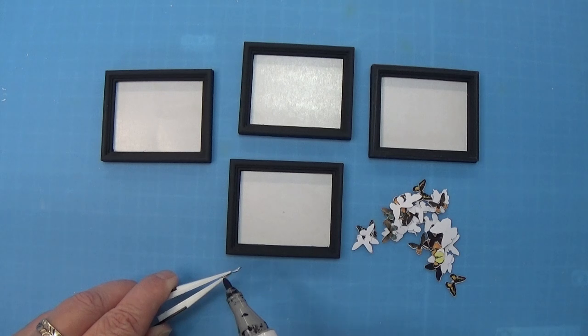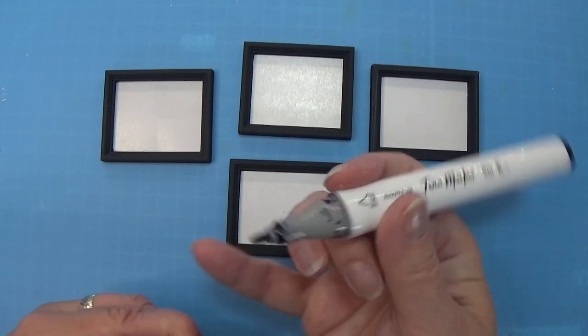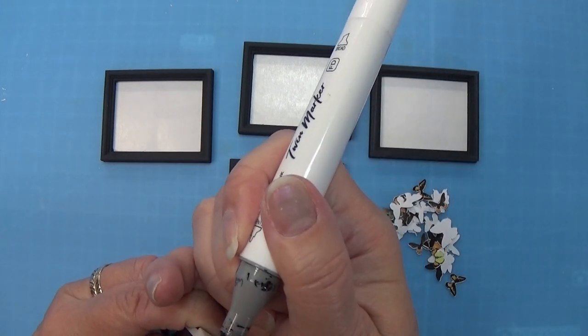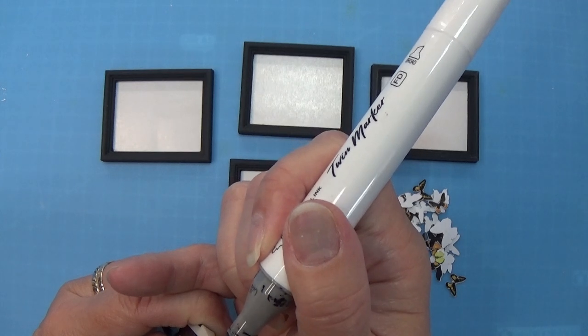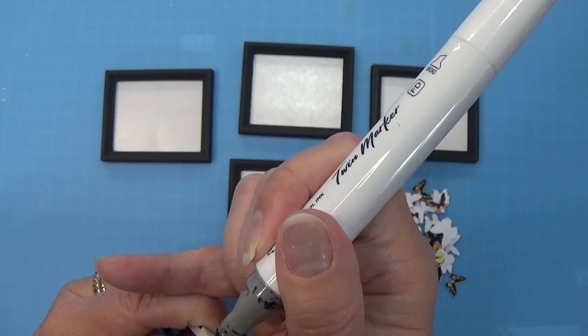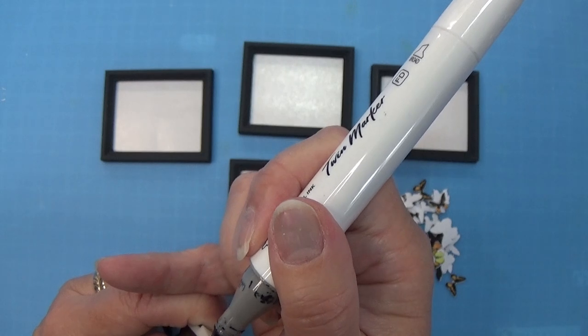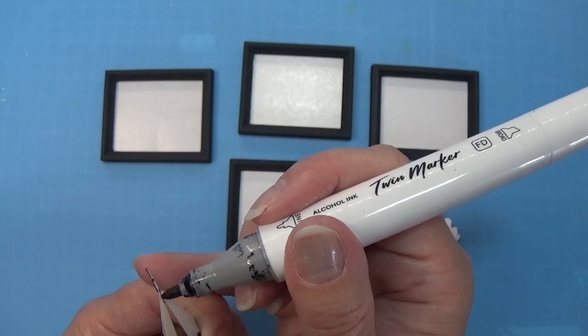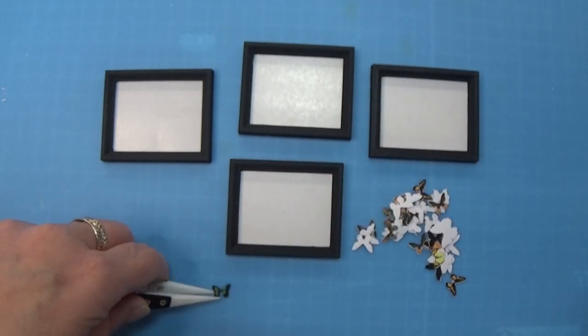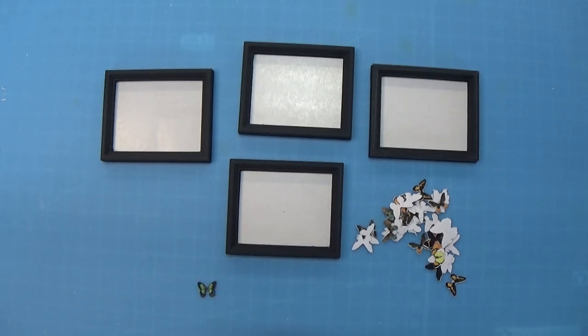I am coloring the edge of each of my butterflies and here I'm using one of these alcohol markers because the other one I used was not that good for this one and I'm trying to use an alcohol marker that fits the color of the butterfly itself and I'm taking my time and doing this on all butterflies.